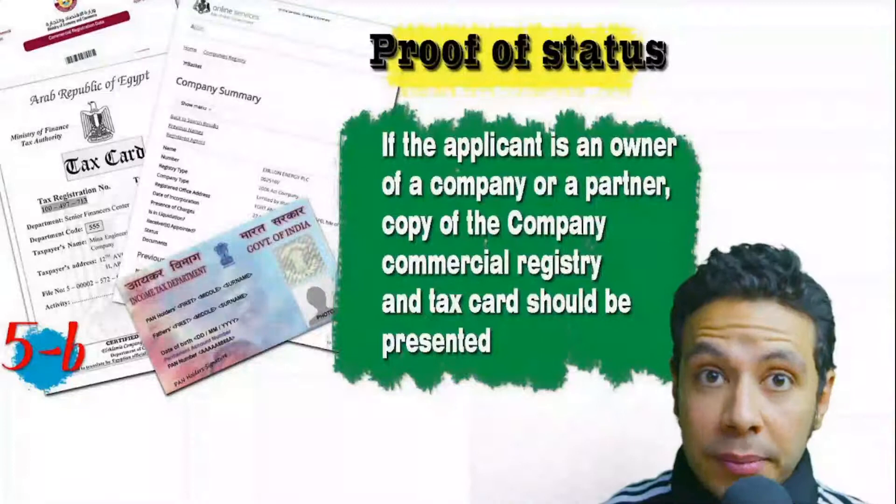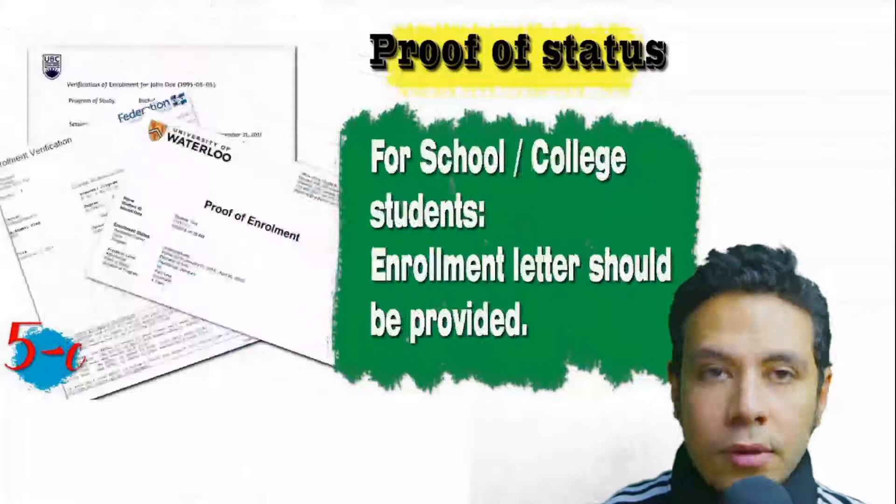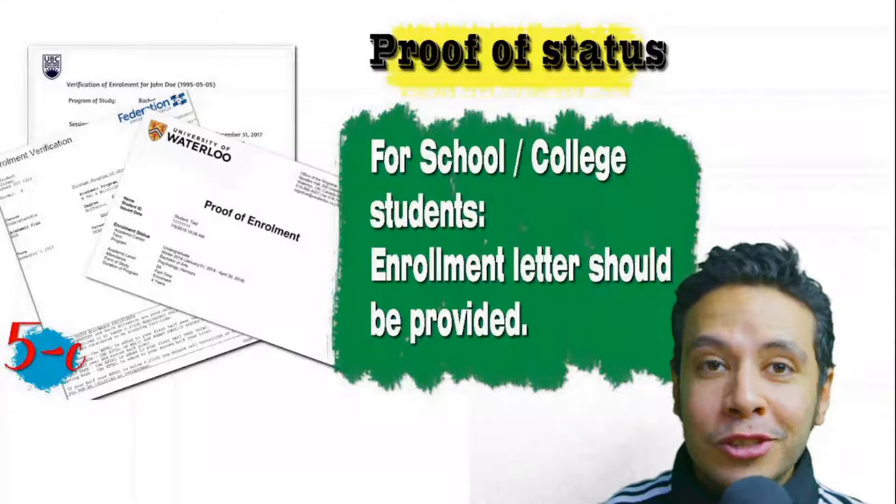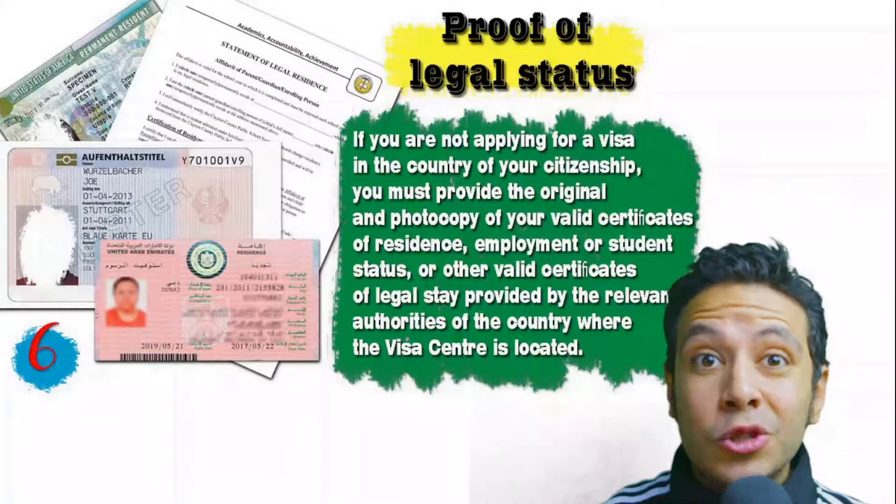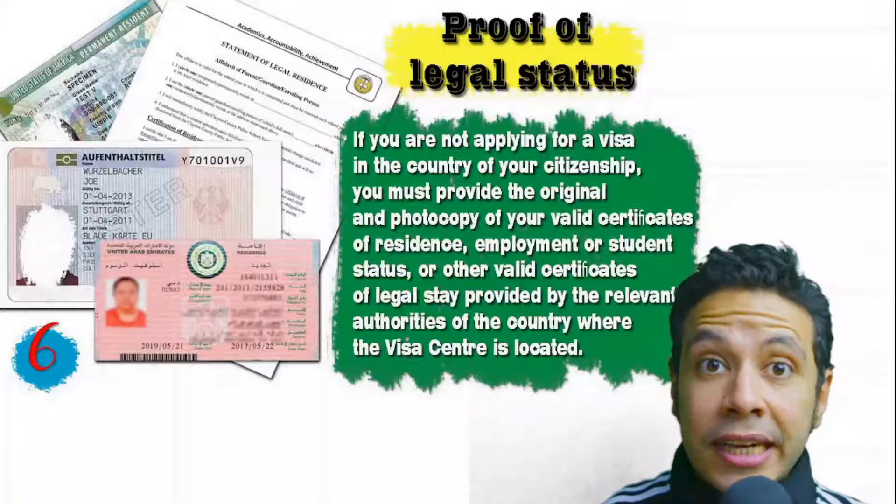If you are a student, an enrollment letter from your university or school should be provided. If you are applying from a country different from your own, you will need to provide proof of legal status — a certificate of legal residence in that country. In some cases, a valid residence visa for that country can also be accepted.